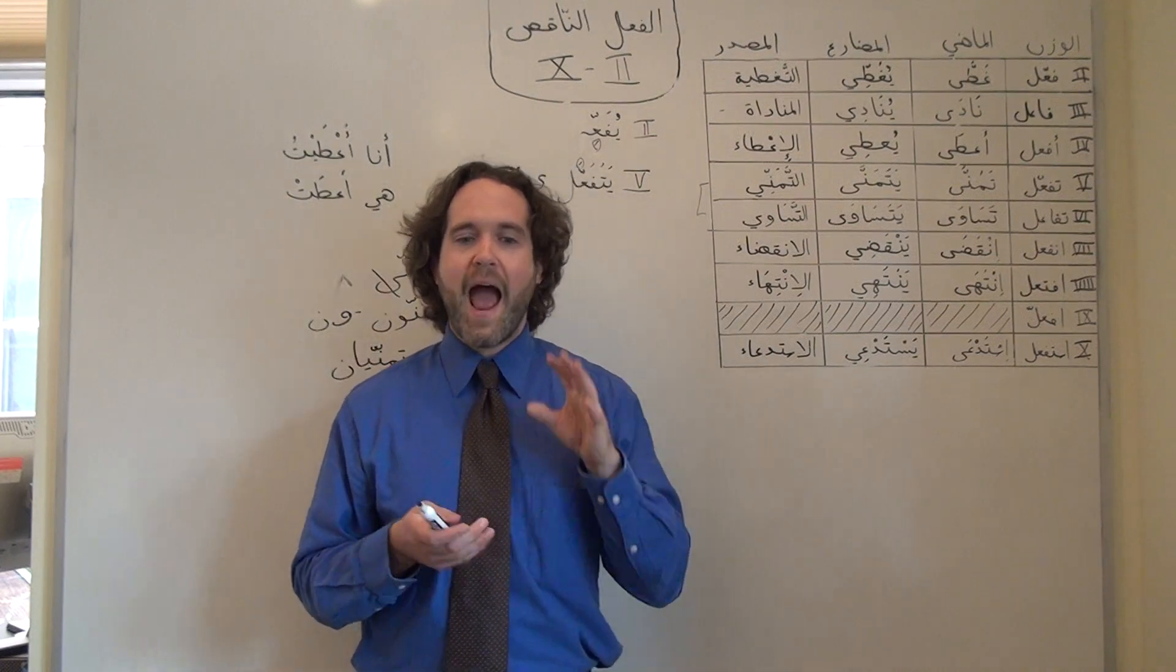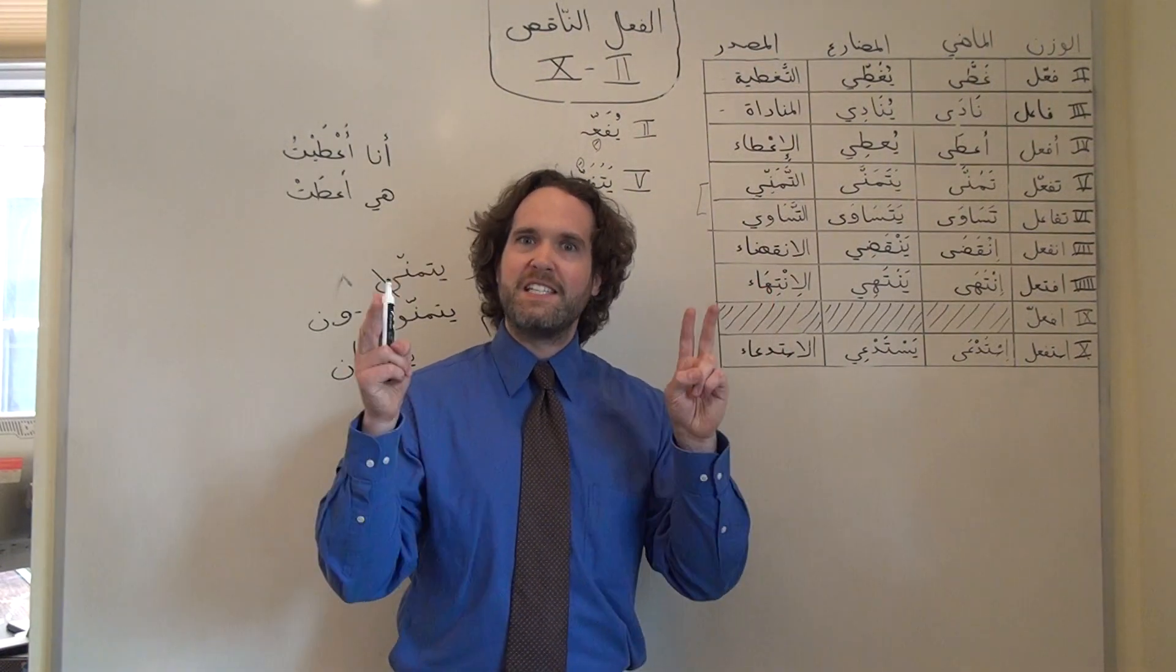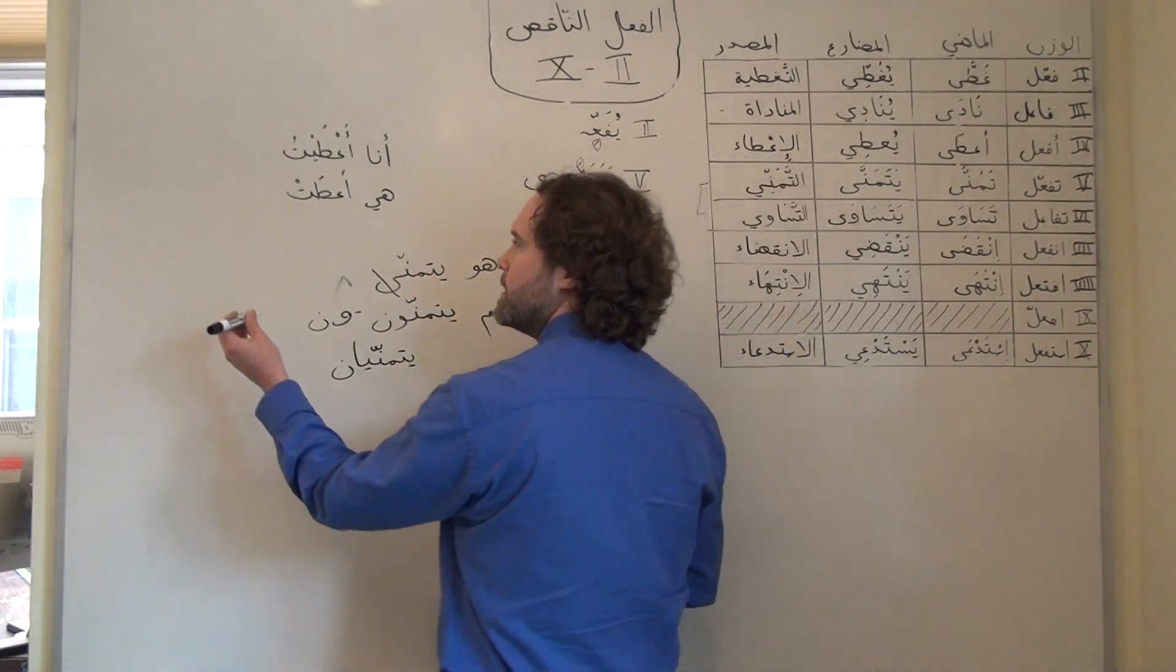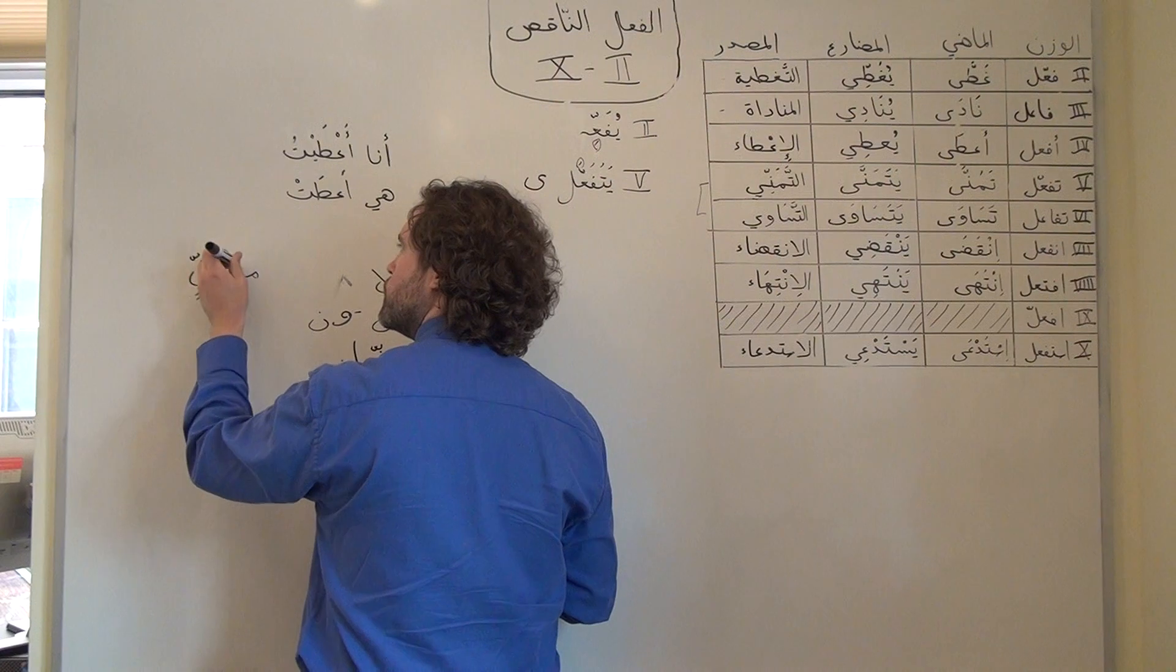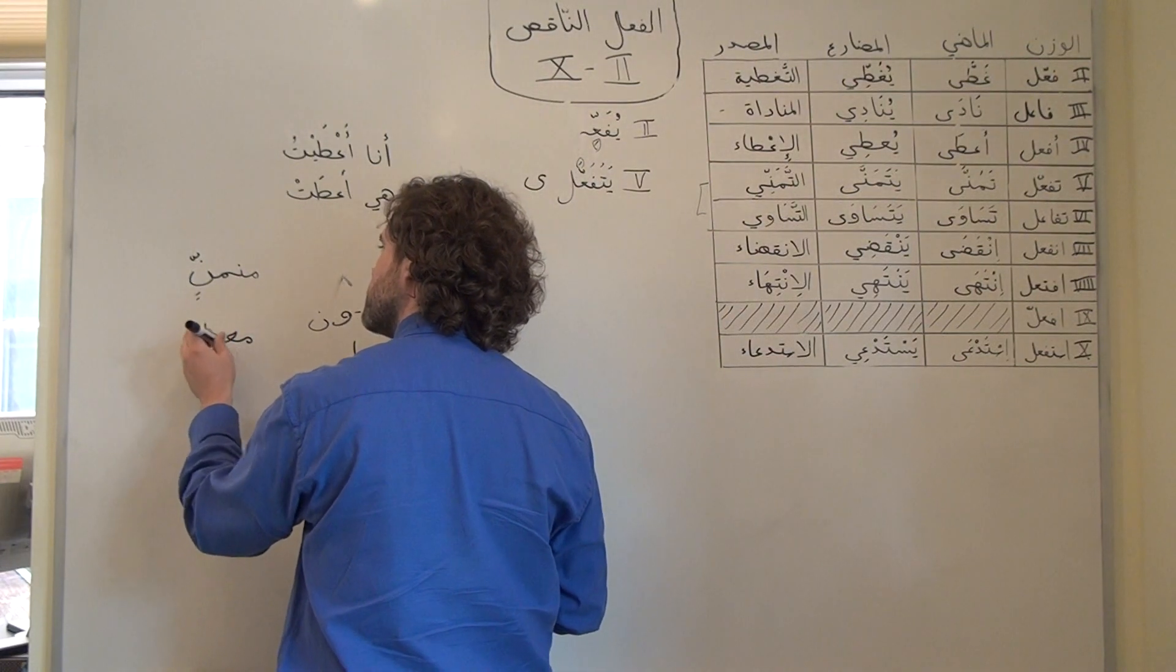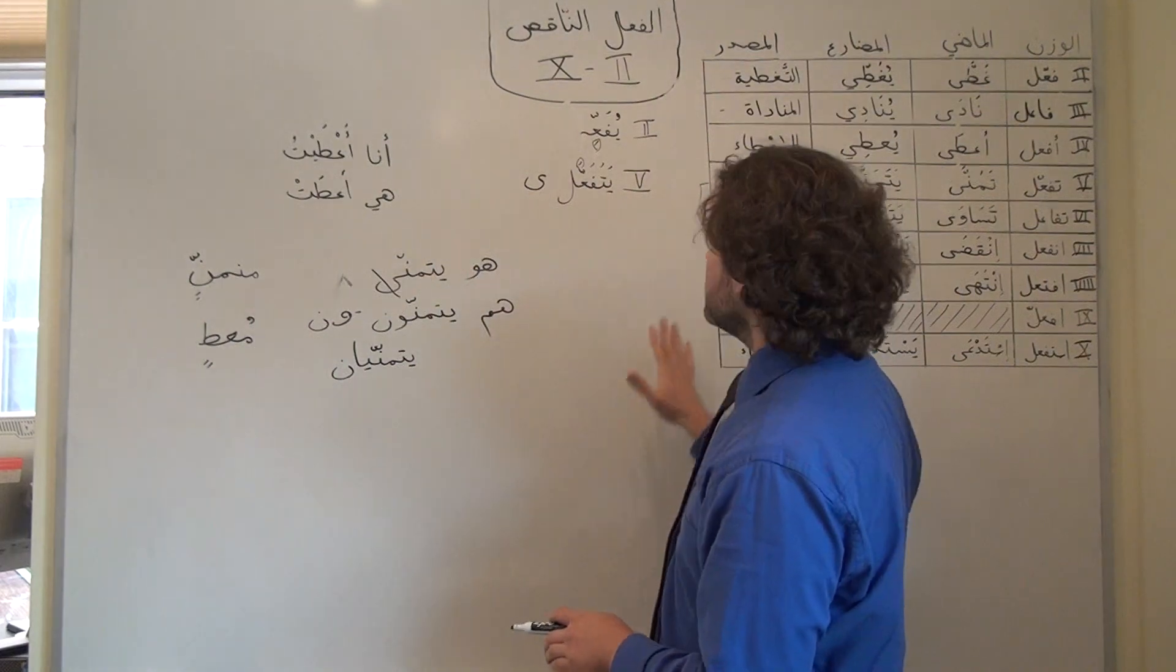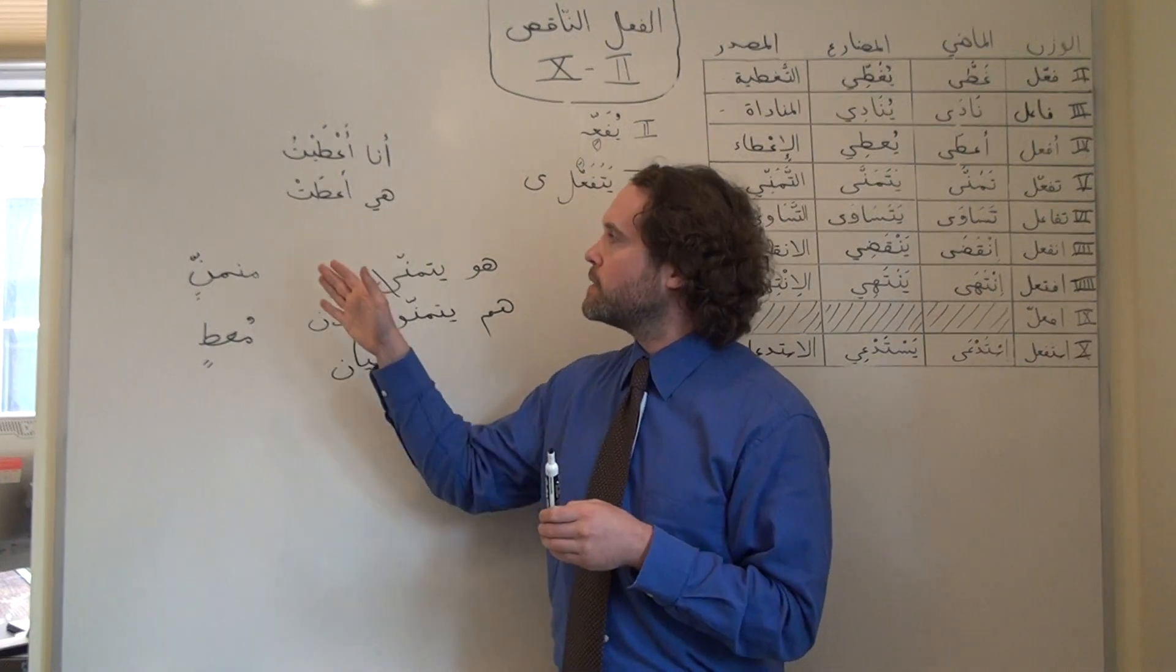One final note, just as with form one, the active participles, the اسم فاعل, of all of these أوزان are going to be منقوص, they're going to be defective too, which means that in formal Arabic we'll often see them with a special set of case endings, with that final vowel dropped. So if we were talking about a hoper, one who hoped, using يتمنى in مرفوع, it would be مُتَمَنٍّ with كسرة تنوين, or giver, one who gives, would be مُعْطٍ. There are separate videos on construction of اسم فاعل, the active participle, and on how we use الاسم المنقوص, but because we have vowels at the end of all these verbs, we're always going to get an اسم منقوص if we're creating a masculine singular noun from them.